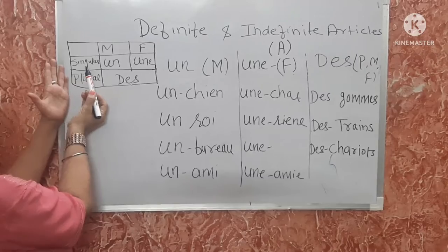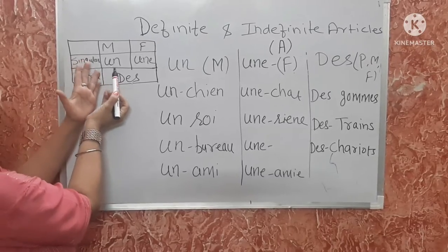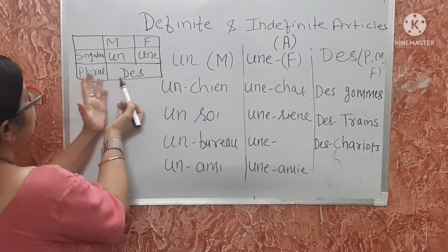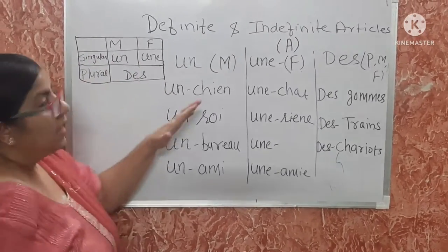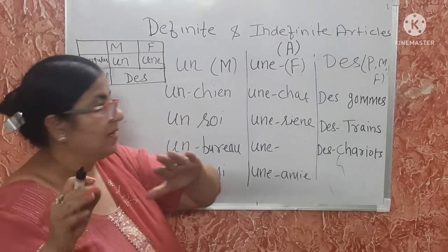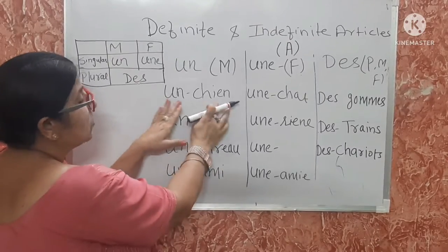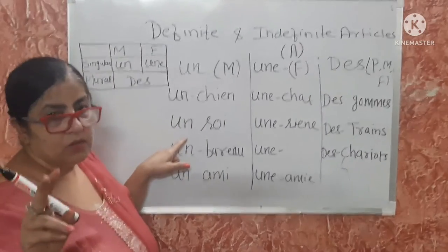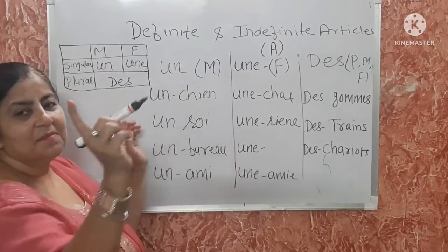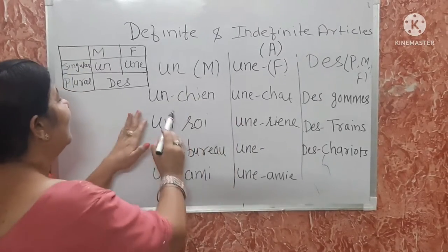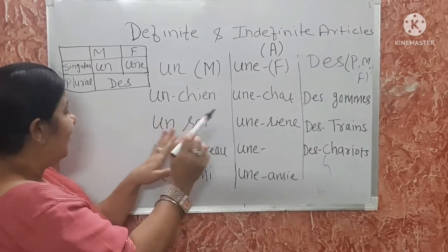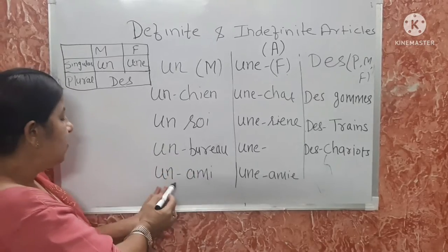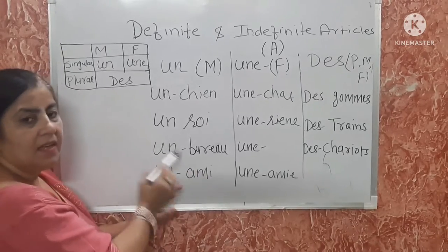In the table: singular masculine is 'un', feminine is 'une', and plural is 'des'. Un is used with masculine. For example: 'un chien' — a dog. 'Un oiseau' — a bird. 'Un zéro'. 'Un ami' — a friend.